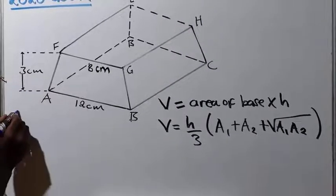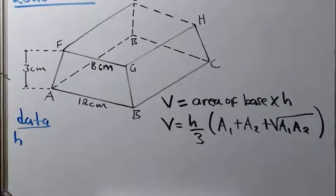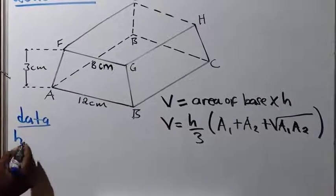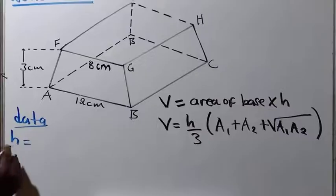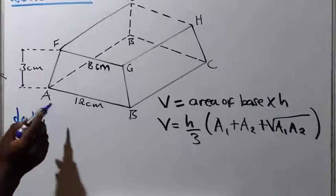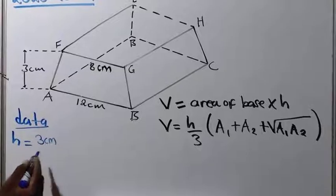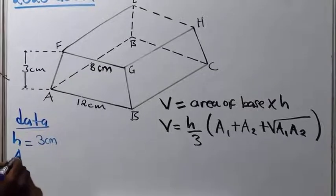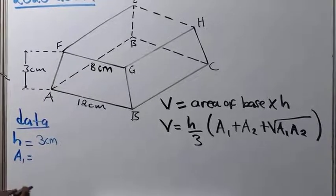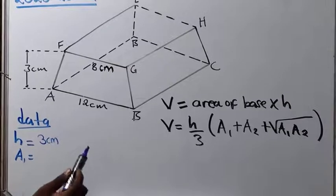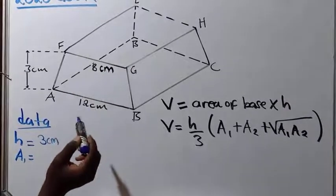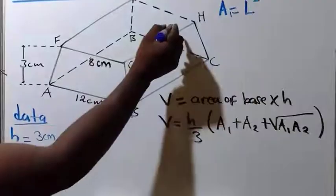Having looked at the formula now, let's organize our data. H is equal to, this is the height. You have told in the question that the height is 3 centimeter. Then, area 1, according to the formula here. Remember what I've said? Here, we have a square.